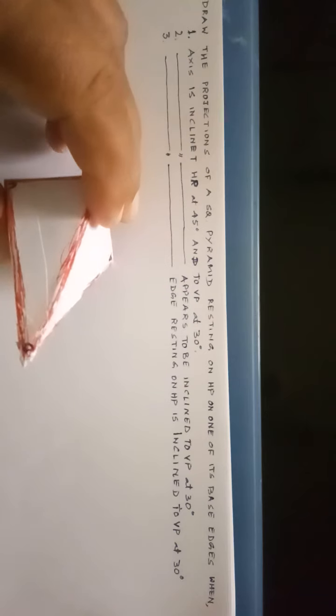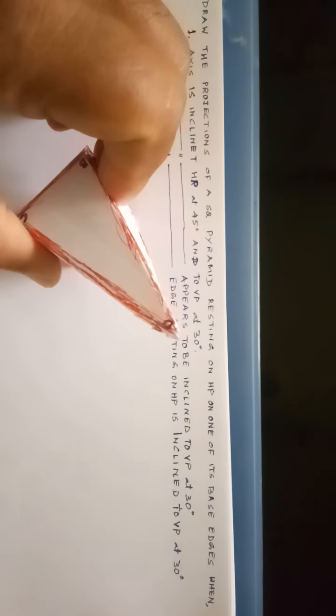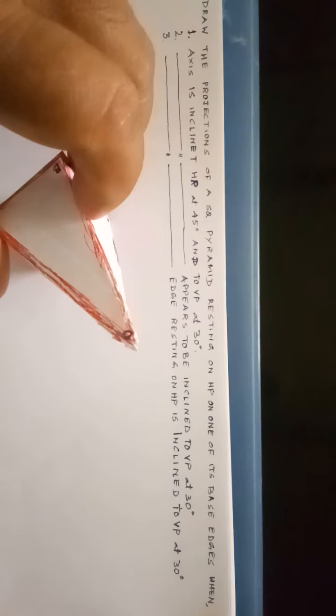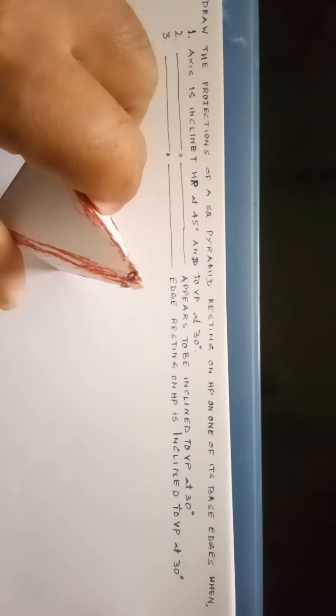Good morning. In this class we learn how to draw the projections of a pyramid in different positions. We will take a square pyramid resting on HP on one of the base edges. The first type of problem will be when the axis is inclined to HP at 45 degrees and to VP at 30 degrees. The second type will be axis inclined to HP at 45 degrees and appears to be inclined to VP at 30 degrees, and the third type will be the axis inclined to HP at 45 degrees and the edge on which it is resting is inclined to VP at 30 degrees.